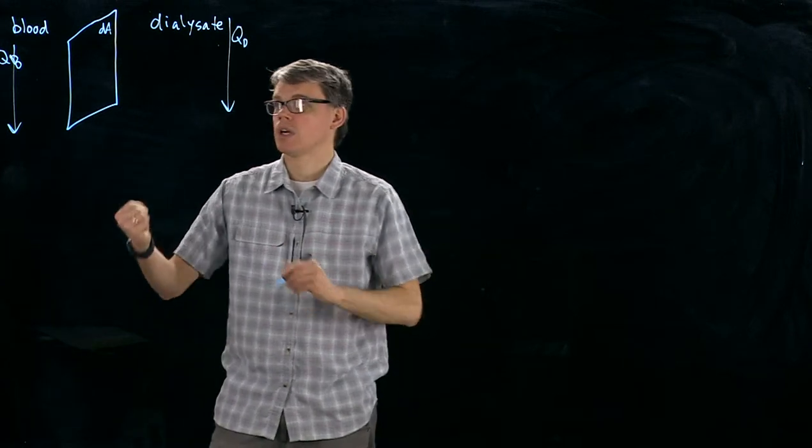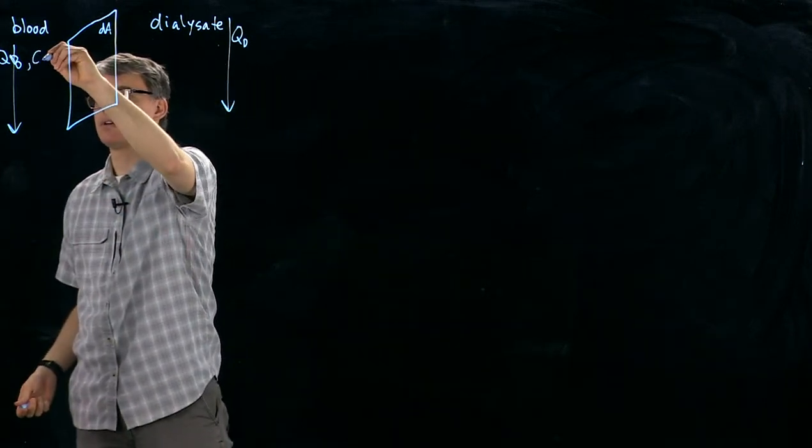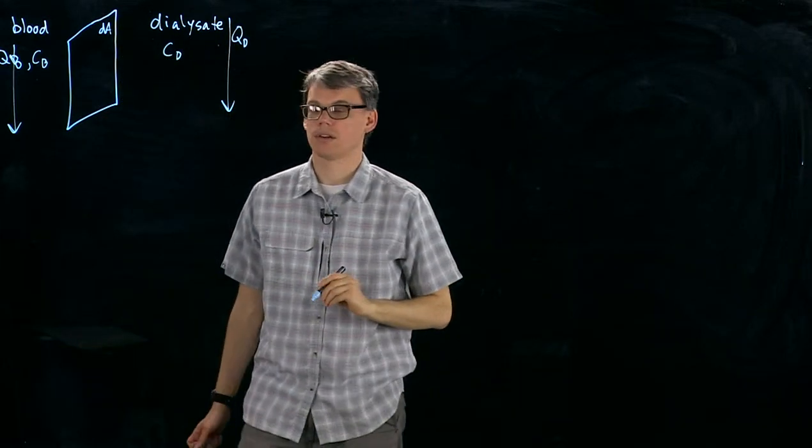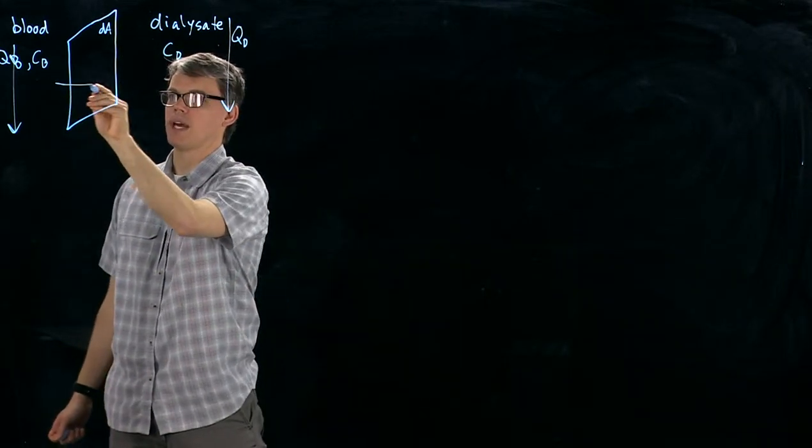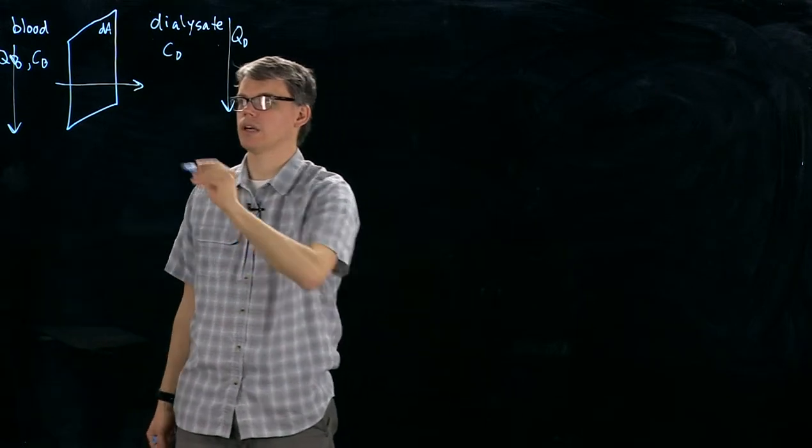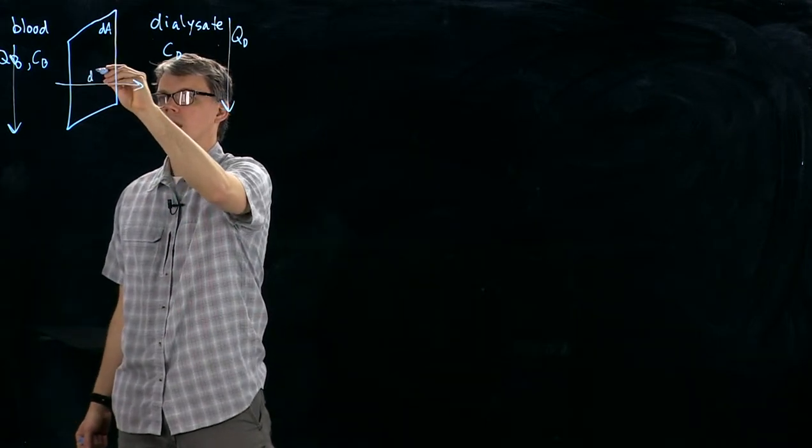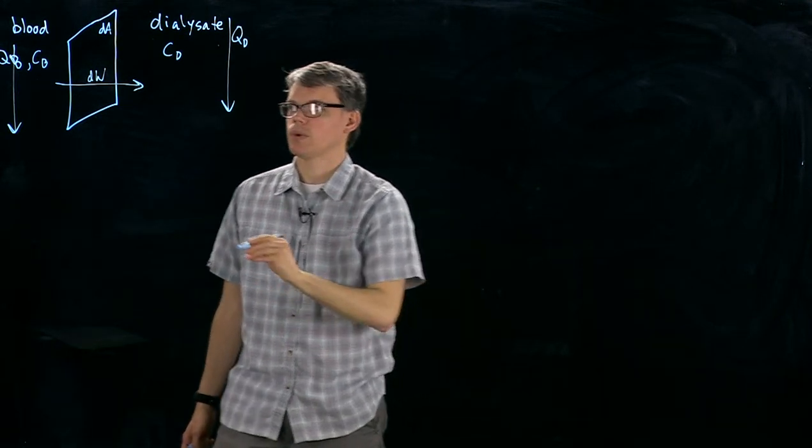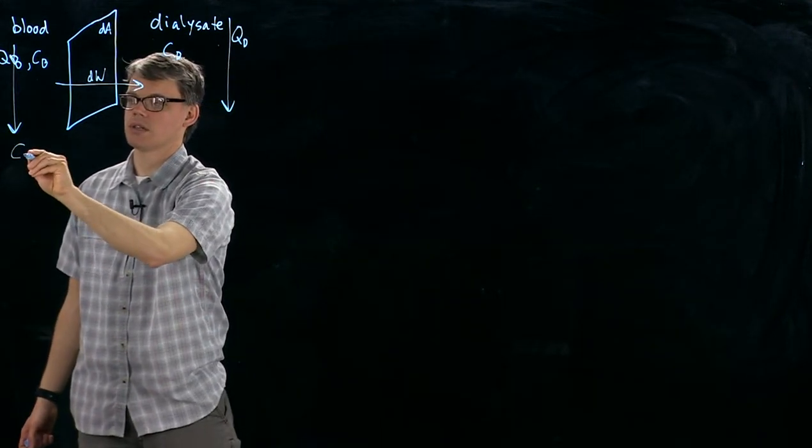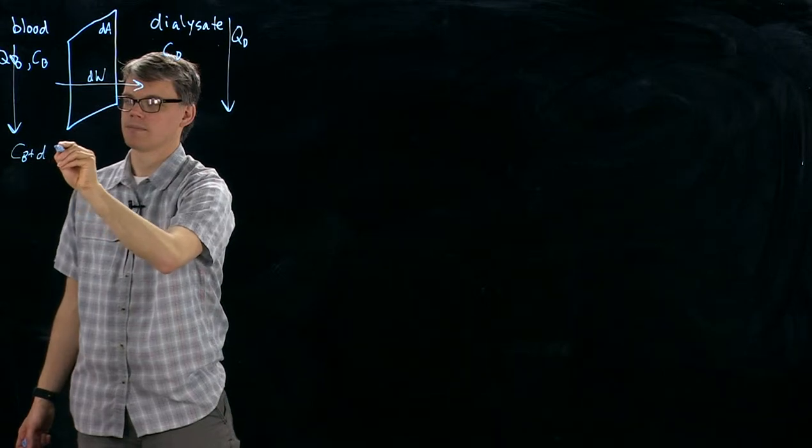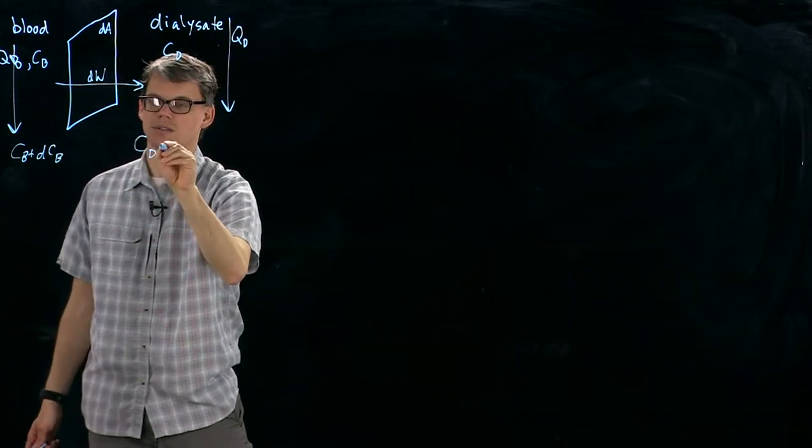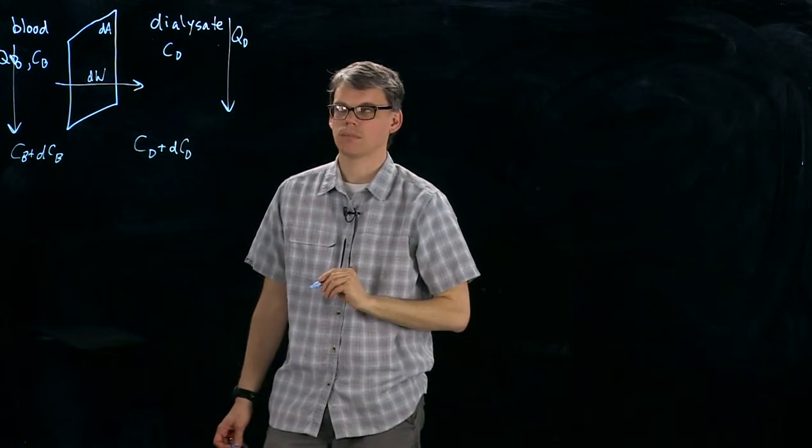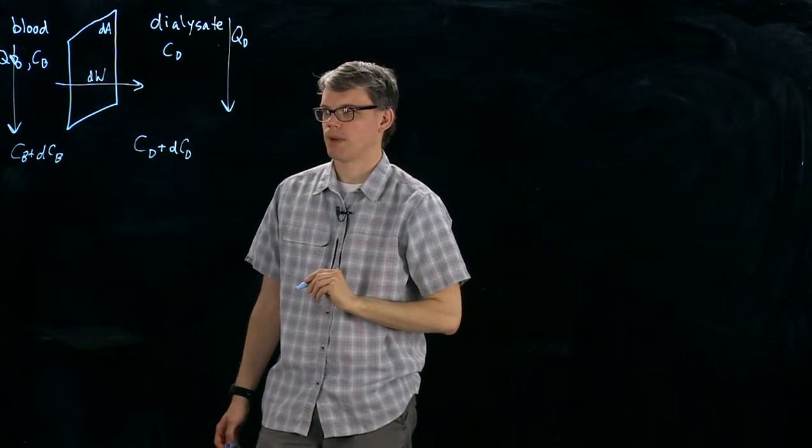So what's going to happen here? Well, assuming we have a concentration of solute in the blood and a concentration of solute in the dialysate that are different, we're going to have a mass transfer. And since we're looking at just a small area here, the amount of mass transferred is also going to be very small. And so we have a change in concentration in the blood and a change in concentration in the dialysate. So there's our basic model.